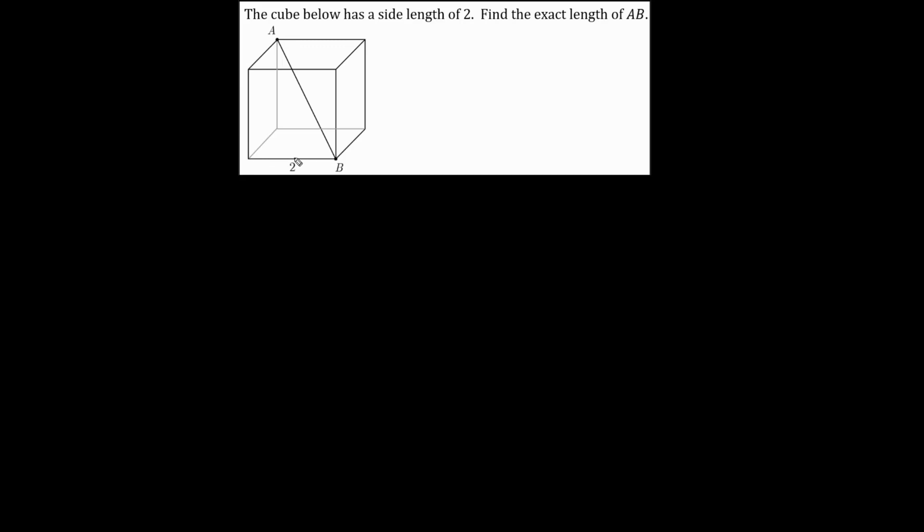This cube has a side length of 2. Let's find the exact length of AB, this diagonal. So this here is 2, and this here is a right angle. So according to the Pythagorean theorem, we'll call this C. C squared equals 2 squared plus 2 squared, which is 4 plus 4, which is 8.